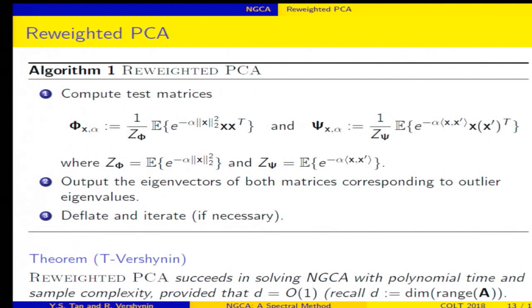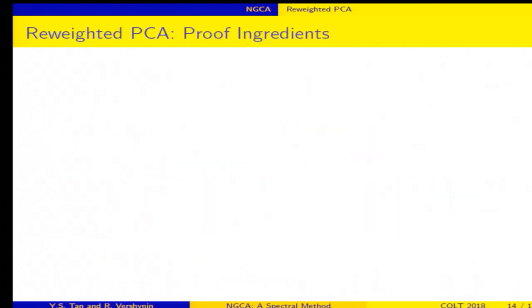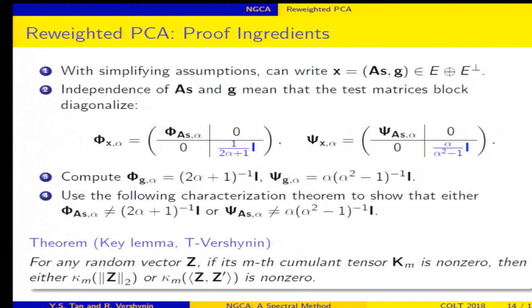Okay, so here's our theorem. So the theorem says that this algorithm works in polynomial time and sample complexity so long as the dimension is constant. And here's some ingredients of the proof that I'm not going to go into. Thank you.